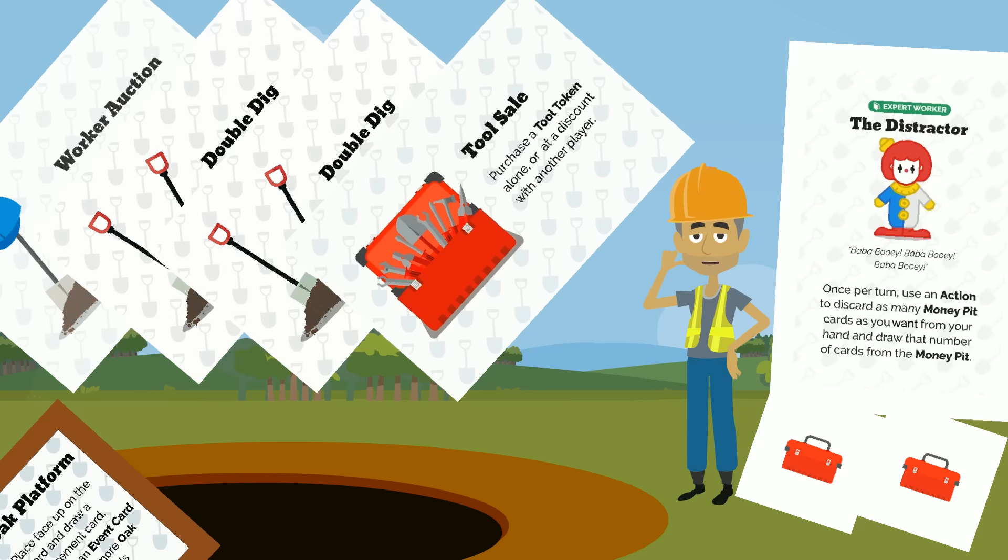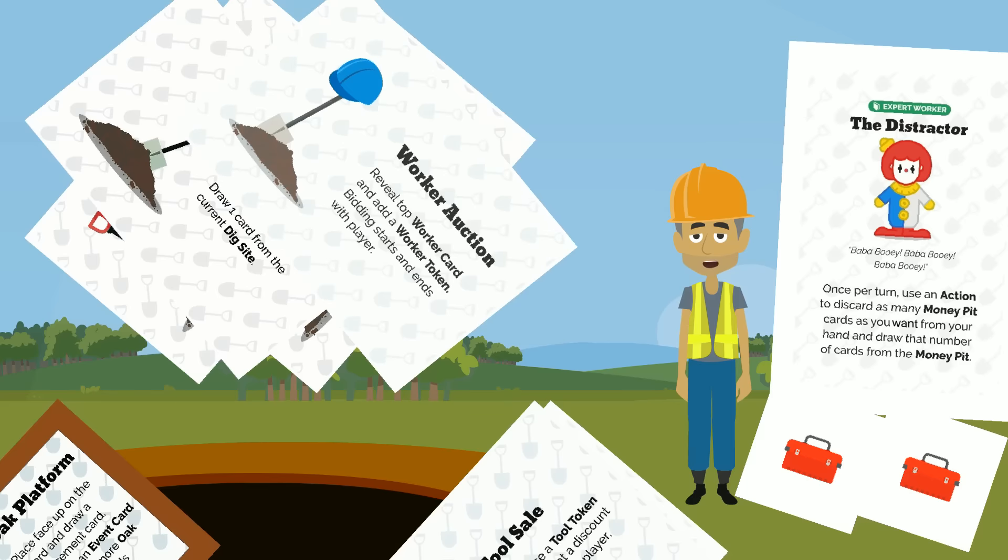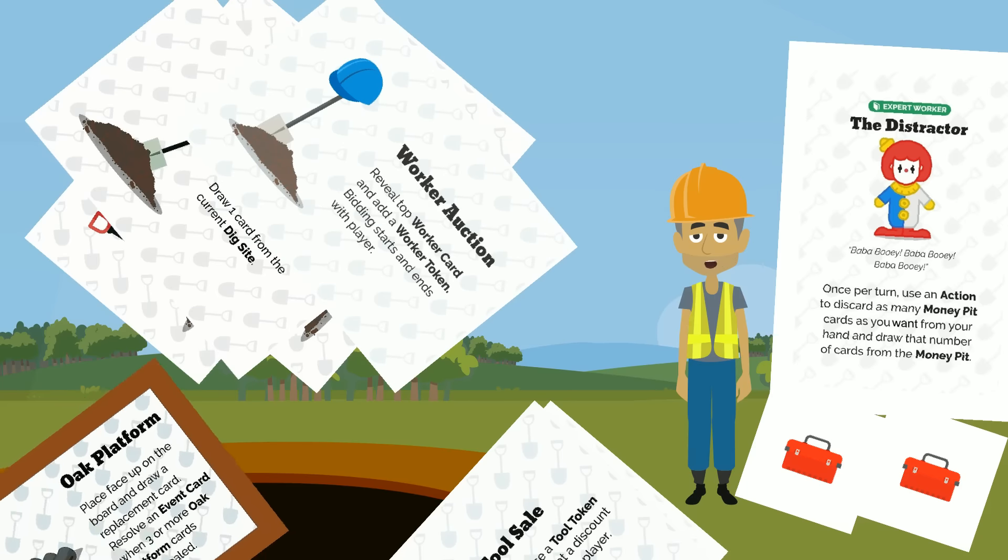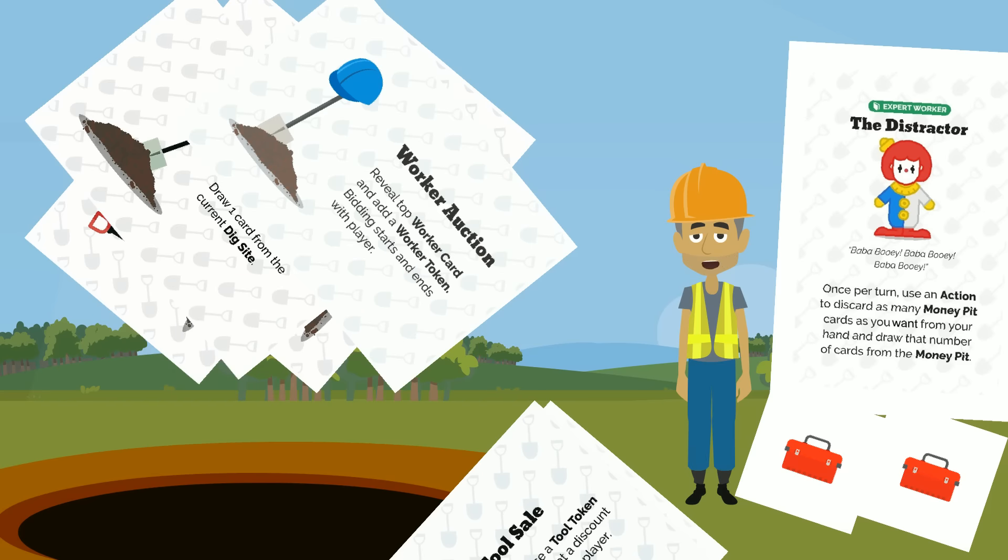Later in the game you may have the distractor. This worker allows you to use an action to discard money pit cards and redraw replacements, in case you are hoping for a particular card on your turn. If you draw any oak platforms while using this worker card, be sure to discard them face up and draw a replacement.